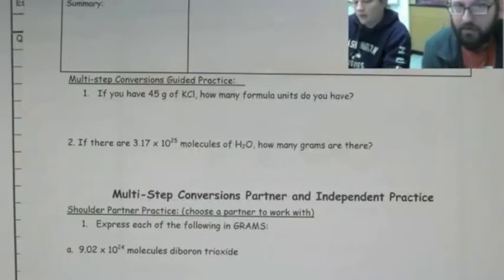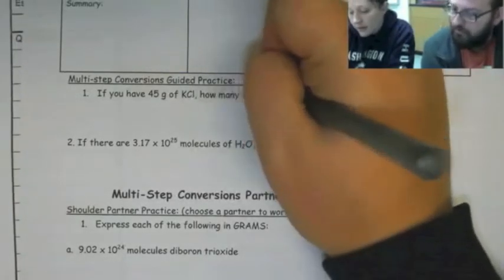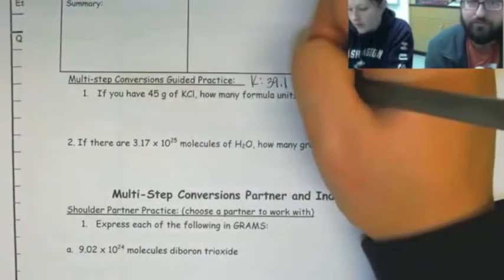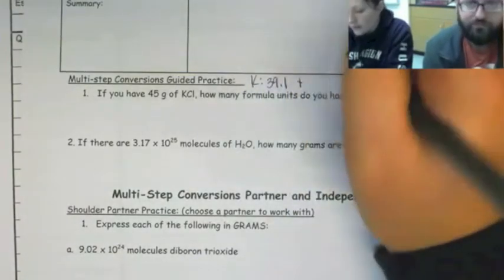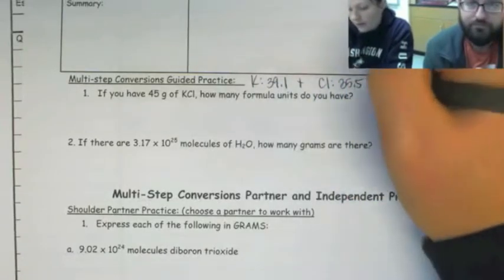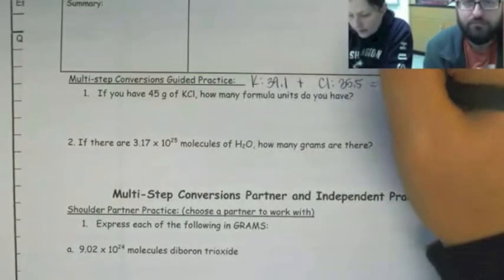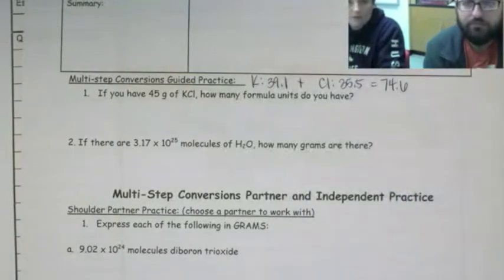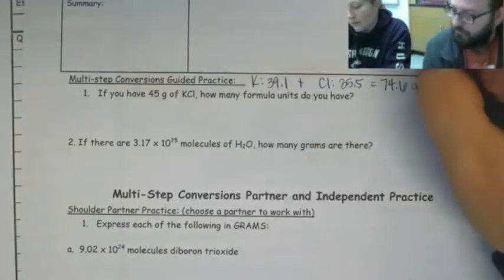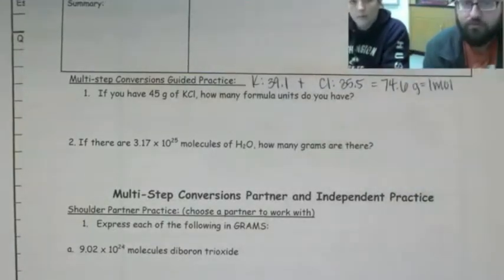So we've got KCl. So if I look up K, it's 39.1. I'm going to round to the 10th. And then if I look up Cl, it's 35.5. And if I add those together, I get 74.6. Okay. So that's the molar mass of KCl. Okay. So I can... Equals one mole. Right. Okay.